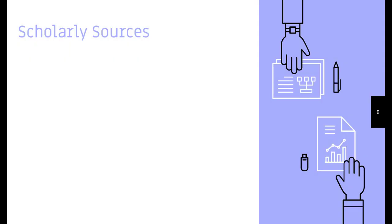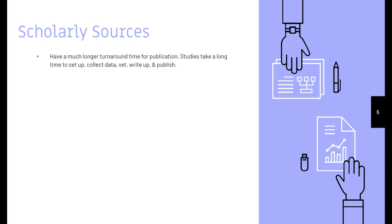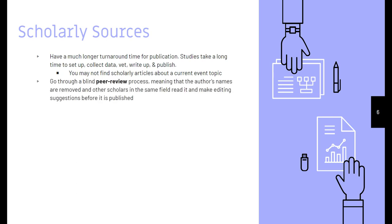Scholarly sources have a much longer turnaround time for publication. Studies take a really long time to set up, vet, collect data, write, and publish. You may not find any scholarly articles about a very current event topic — sometimes this process can take up to two years from the time of an event to the time a true scholarly article is published. Scholarly articles go through a blind peer review process, meaning the author's names are removed and other scholars in the same field read it and make editing suggestions before it's published. This leads to really high-quality writing, high-quality scientific evidence, and very little bias.